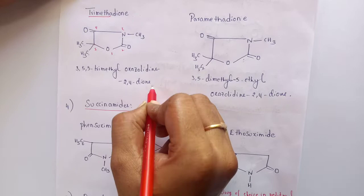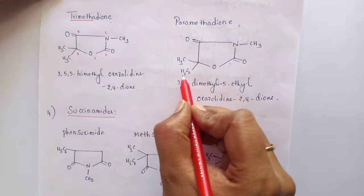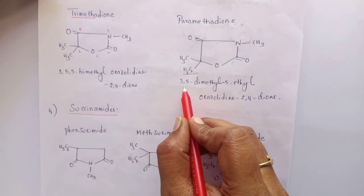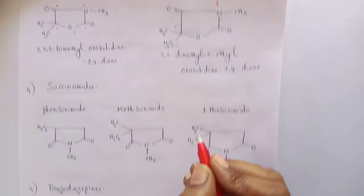The next drug is paramethadione. It has a similar structure to trimethadione, but the difference is that one of the methyl groups at the 5th position is replaced with an ethyl group. The chemical name is 3,5-dimethyl-5-ethyloxazolidine-2,4-dione. Both come under the category of oxazolidinedione derivatives.